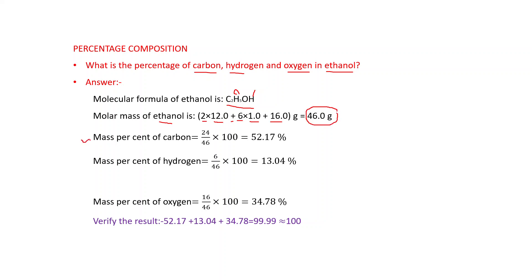Mass percent of carbon: 2 × 12 = 24, divided by 46, multiplied by 100, gives 52.17%. Mass percent of hydrogen: 6 divided by 46 multiplied by 100 gives 13.04%. Mass percent of oxygen: 16 divided by 46 multiplied by 100 gives 34.78%. To verify, add all three mass percentages — they come to nearly 100, confirming our results are correct.